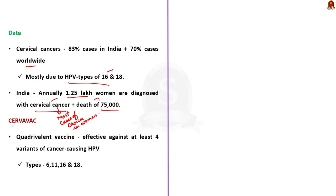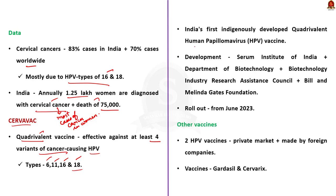Cervavac is a quadrivalent vaccine, meaning it is effective against at least four variants of cancer-causing human papillomavirus — specifically types 6, 11, 16, and 18. Cervavac is India's first indigenously developed quadrivalent human papillomavirus vaccine. It was developed by the Serum Institute of India in partnership with the Department of Biotechnology, the Biotechnology Industry Research Assistance Council, and the Bill and Melinda Gates Foundation.